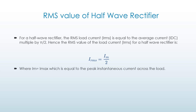For a half wave rectifier, the RMS load current is equal to the average current multiplied by pi by 2. Hence the RMS value of the load current IRMS for a half wave rectifier is given by that formula, where IM equals I-max, which is equal to the peak instantaneous current across the load.